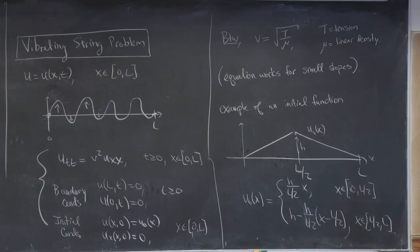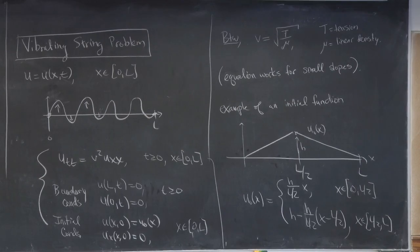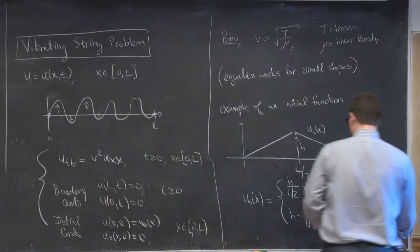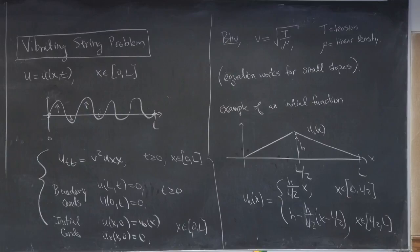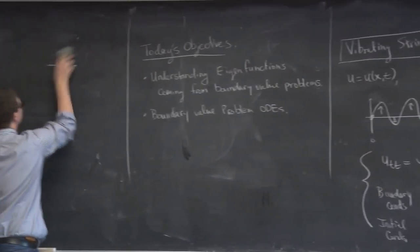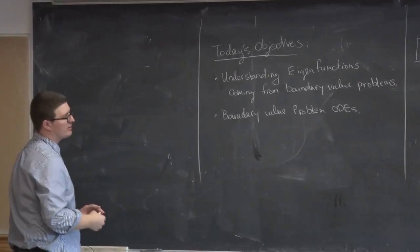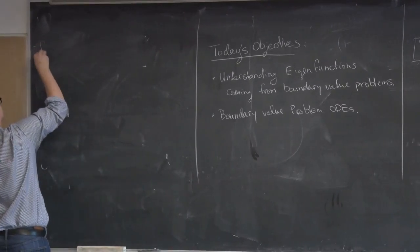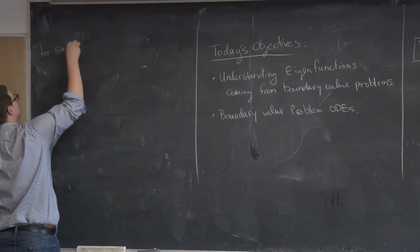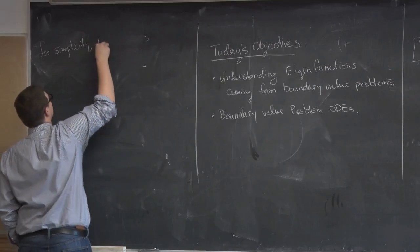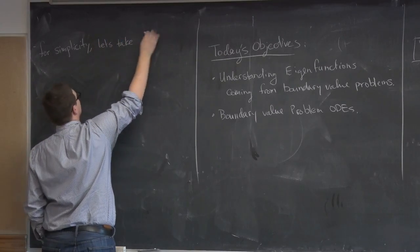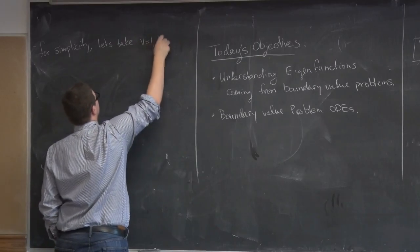I want to talk about how to solve this differential equation. For simplicity today, I'm going to choose some special values. You can actually change variables from the general equation to simplify it. I'll assume that v equals 1, L equals 1, and H equals 1, so we're just going to talk about the math.